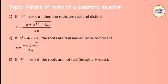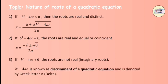Third, if b squared minus 4ac is less than 0, then the roots are not real — imaginary roots. Since b squared minus 4ac determines the nature of roots, it is known as the discriminant of a quadratic equation, and it is denoted by the Greek letter delta.